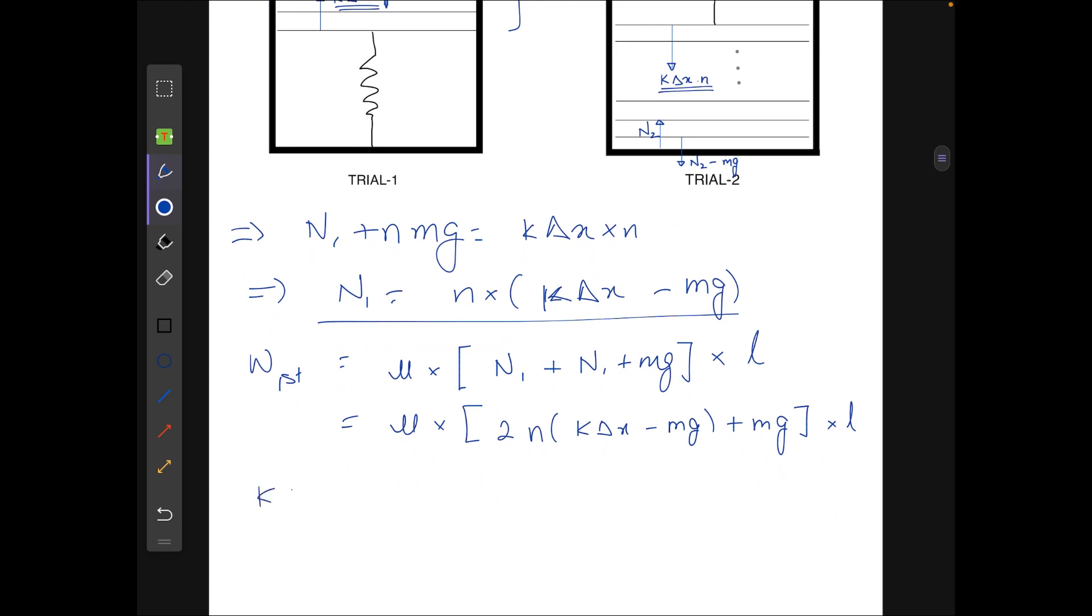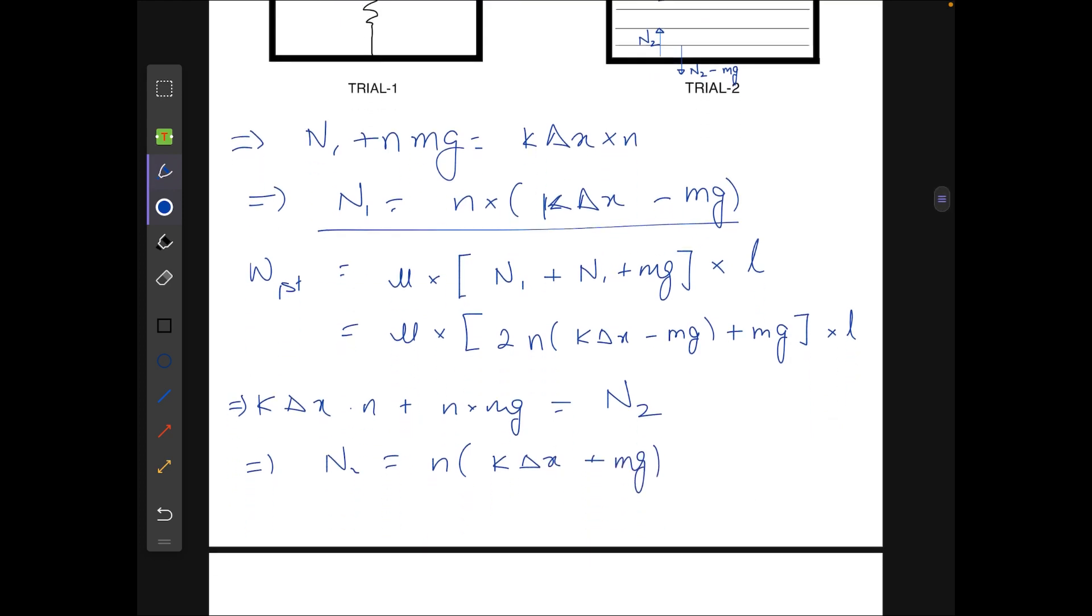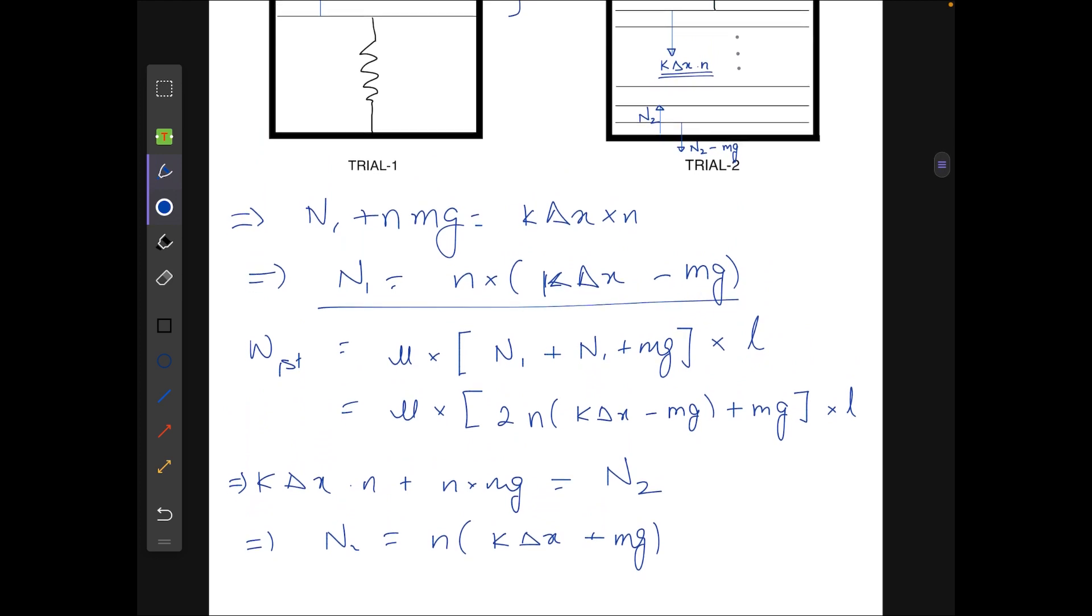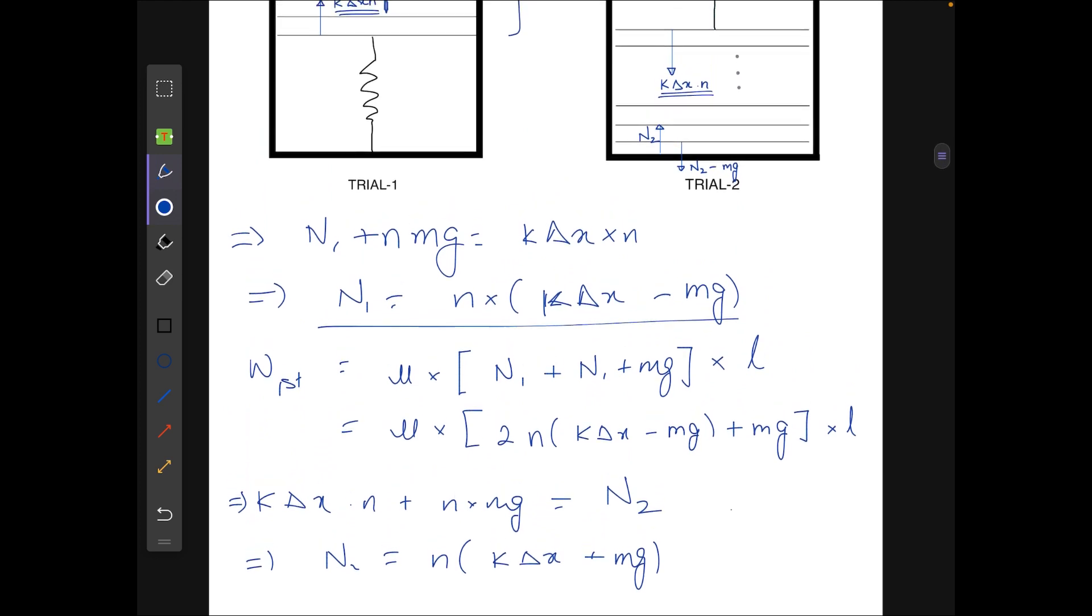We will get the equations that k delta x into n plus n into mg will be equal to n2. So from here n2 equals n times (k delta x plus mg).